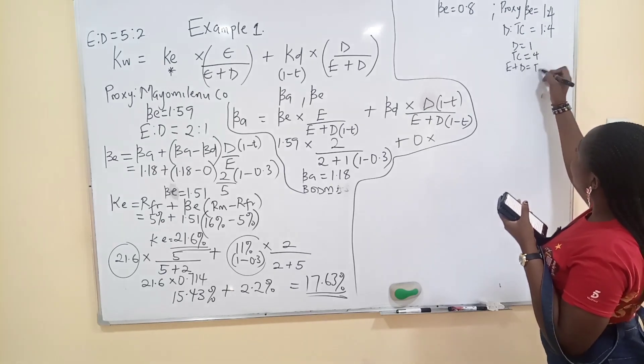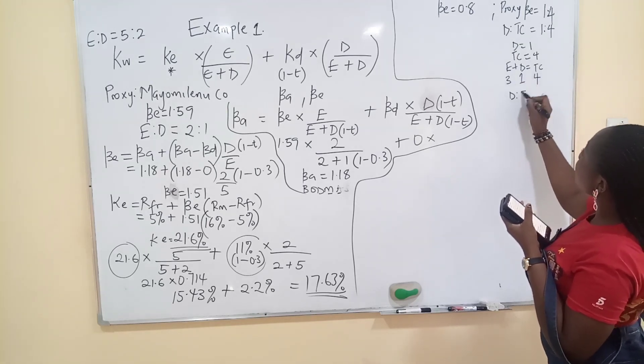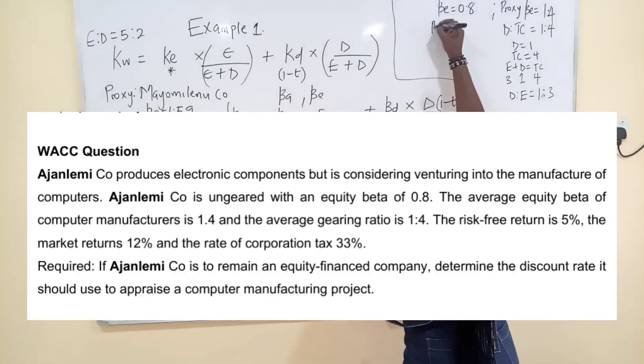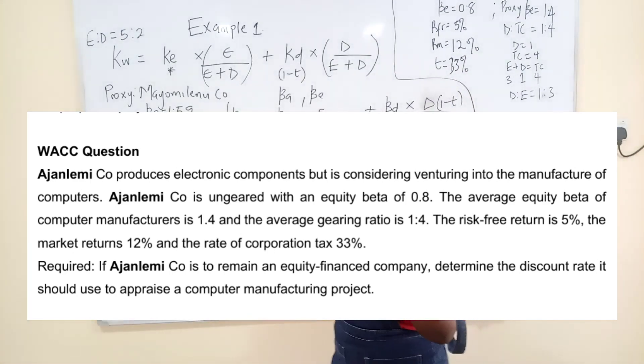And you know that equity plus debt is equal to total capital. It means the debt to equity ratio is what? 1:3. So there is no BD mentioned. Then they said risk free return is what? 5%. Market return is what? 12%. Then they said and the corporation tax is what? 33%. They said required, if Agileme Co. is trying to maintain an equity finance company, they are telling you that the capital structure will not change. See, kind of a different way to tell you. They want to maintain the equity finance. They don't want to become geared. They are not bringing in debts. Determine the discount rate to use to appraise the computer manufacturing project.